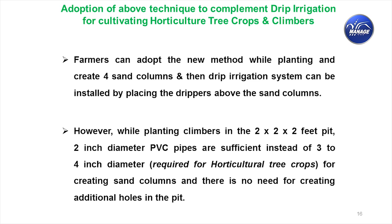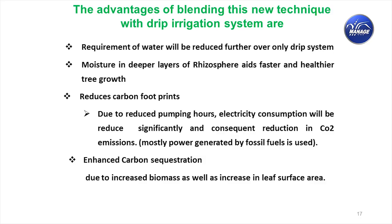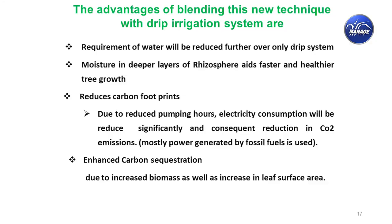For climbers, there is no need for a 3-inch or 4-inch diameter PVC pipe since the water requirement is much less — a 2-inch diameter pipe, either four or two pipes depending on water availability and species requirement, can be used. Once blended with drip irrigation, the water requirement comes down further compared to normal surface irrigation with drip alone. Moisture in deeper layers rises to help faster and healthier tree growth, and there will be enhanced carbon sequestration due to greater biomass.